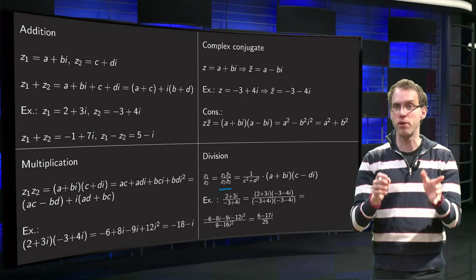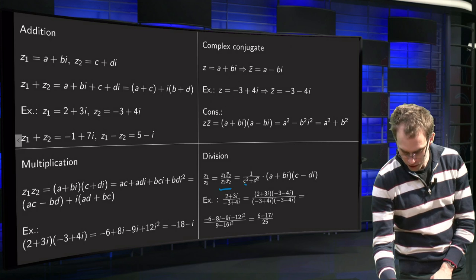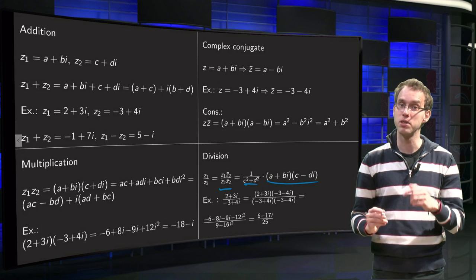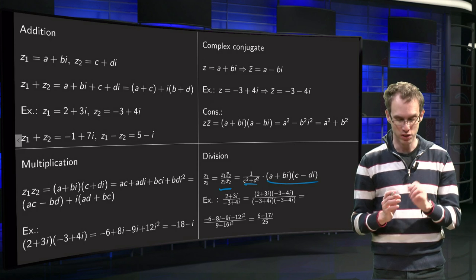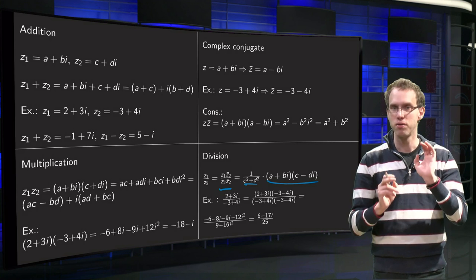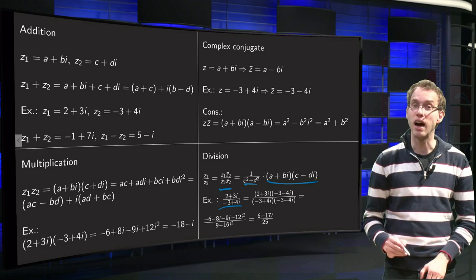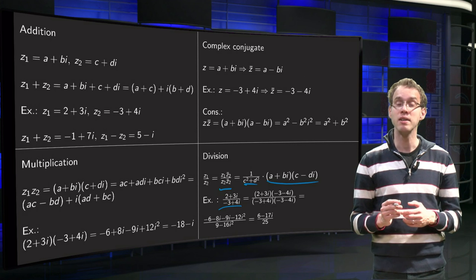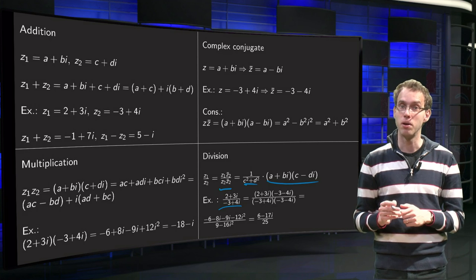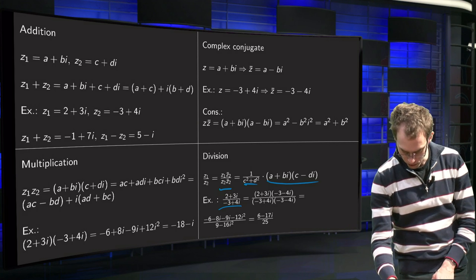In the numerator we have a product of two complex numbers, but we know how to do that. So then we get something of the form 1 over (c² + d²), which is fine, it's a real number, times (a + bi)(c - di), which is okay. Well, let's do a small example of a quotient. Looks difficult, but if you have to do the computations, it's not so hard at all. So we compute (2 + 3i) divided by (-3 + 4i). So the trick is to multiply with 1 with the complex conjugate of the denominator. So we multiply numerator and denominator by -3 - 4i.